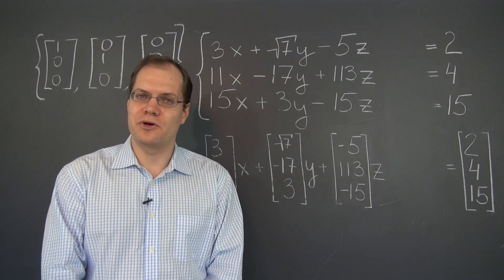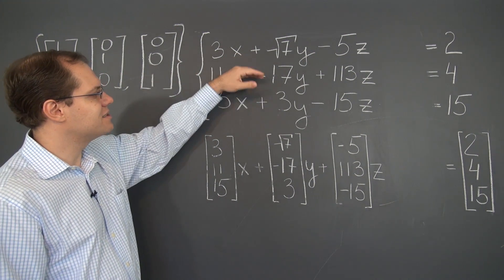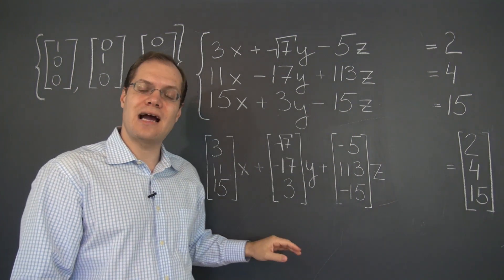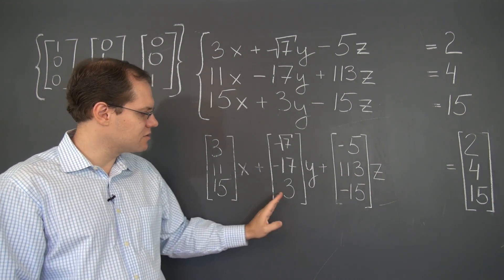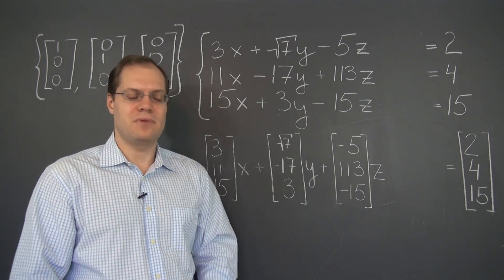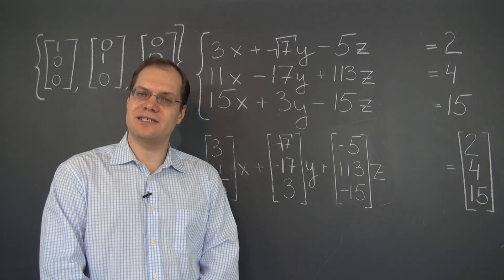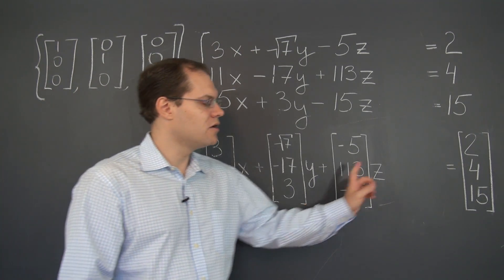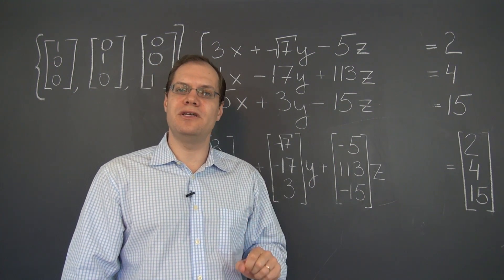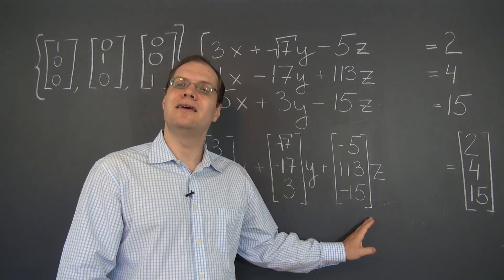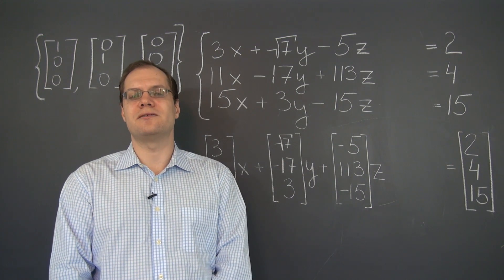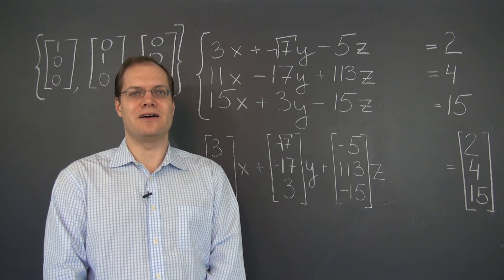And one more important case: when we consider a system that has exactly as many equations as there are unknowns, and when interpreted as a decomposition problem the vectors are linearly independent, then there is always a single solution. Why? Because these vectors would form a basis for the entire space — so no matter what's on the right-hand side, there is always a solution, and the solution is unique because the vectors are linearly independent. These systems are called square, and square systems occupy a very large part of linear algebra.